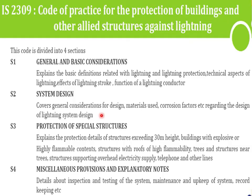Section 3 covers protection of special structures — explaining protection details for structures exceeding 30 meters in height, buildings with explosives or highly flammable contents, structures with roofs of high flammability, trees, and structures near trees. Different types of buildings and special structures are discussed in this section.